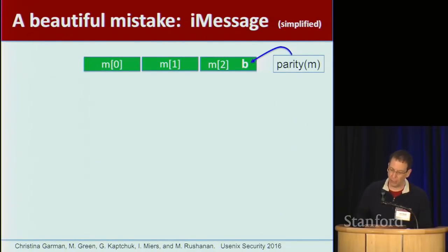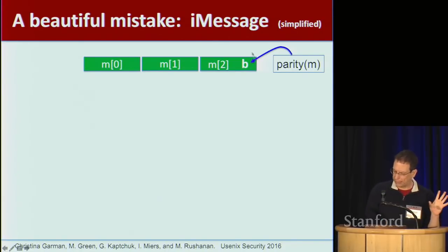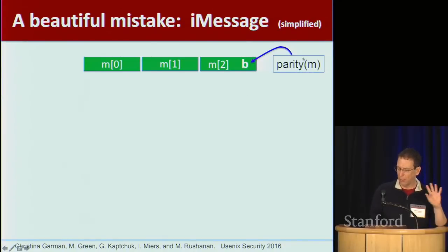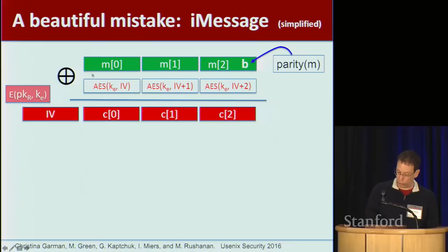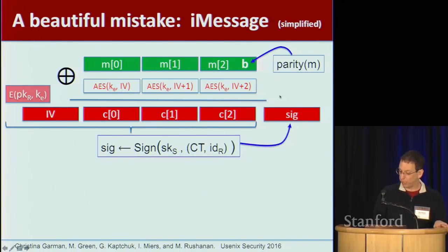I'm just picking on one product because I really like the mistake — it's a very instructive mistake to learn from. This is a mistake that affected iMessage, a result by Garman, Green, Capchuk, Myers, and Roshnan. So the mistake is the following: they started off by taking the message and adding a checksum to it. The checksum was not intended for security purposes — just to detect simple errors. What they did was they encrypted the plaintext using counter mode, just like before: encrypt IV, IV+1, IV+2, producing the ciphertext. Okay, so far so good. And then, remember, we have to do encrypt-then-sign — so the entire ciphertext was then signed.